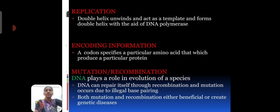Next one is mutation and recombination. The DNA play the role of evolution of the species. DNA can repair itself through the recombination and mutation occur due to the illegal base pairing. Both mutation and recombination either beneficial and create the genetic disorders.